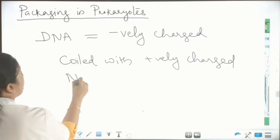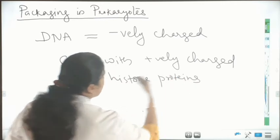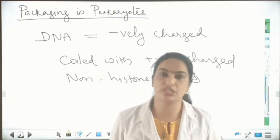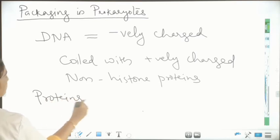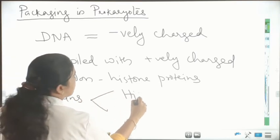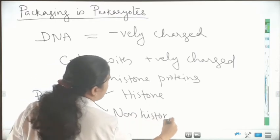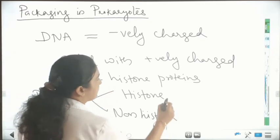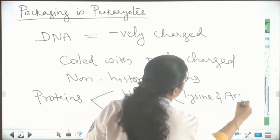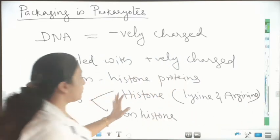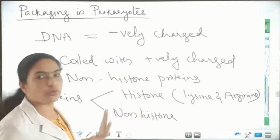And which type of proteins? Non-histone proteins. So here we have to see what are non-histone proteins. Proteins are of two types: histone proteins and non-histone proteins. In histone proteins, they are rich in amino acids such as lysine and arginine. But these are absent in non-histone proteins.